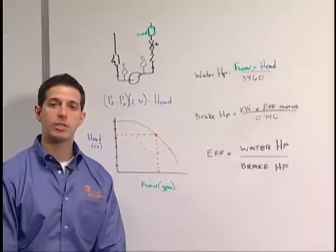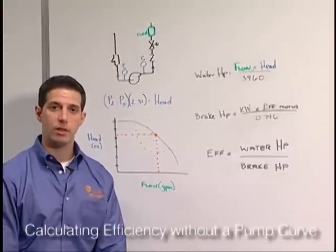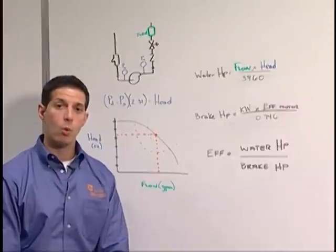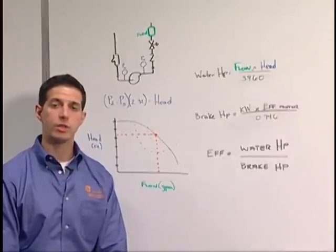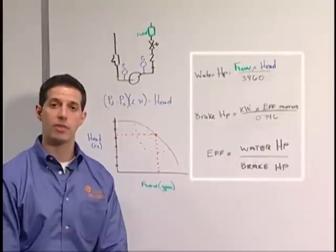If you don't have a pump curve, you can still calculate the pump's efficiency. This is done by correlating water horsepower to brake horsepower. Water horsepower is calculated using the flow and the head divided by 3960.